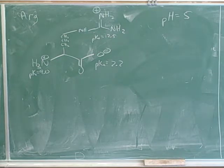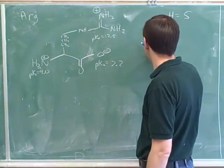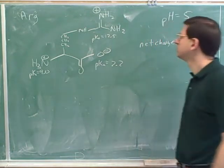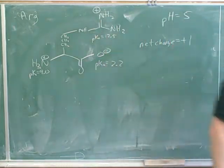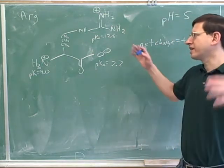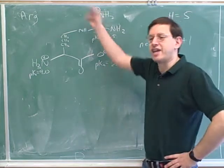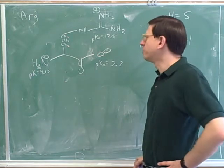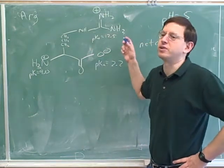What net charge does it give us? Plus one — which is what you'd already decided, so you'd already have the correct net charge. However, we didn't get the right picture for that. A type of question that your instructor likes is something like: draw arginine at a pH of 5, or draw tryptophan at a pH of 12. This is the type of thought process we have to go through, and unfortunately certain amino acids are tricky because sometimes it's hard to tell where to protonate or deprotonate.